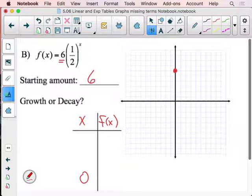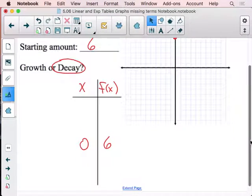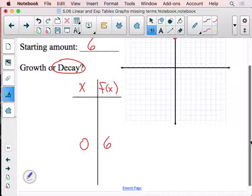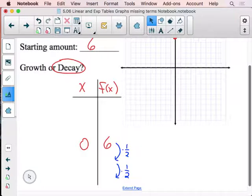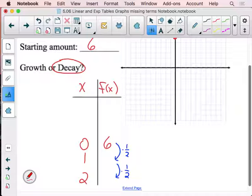All right, now what is my multiplier? I'm multiplying by one half. If I multiply by one half that's going to make things smaller, so that's going to be decay. We can go ahead and fill in our table for the values one and two by simply multiplying by that one half. So I had six times one half is three, and three times one half is three halves or one and a half. We can go ahead and plot those points: (1,3) and (2, 1.5).